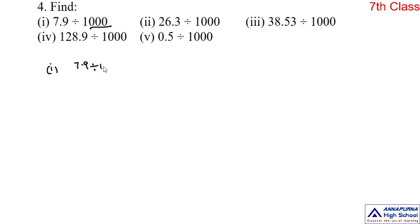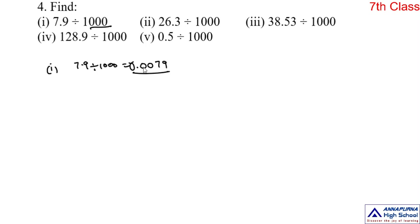So, 7.9 divided by 1000. Write the number first — ignore the decimal point: 79. Now shift the decimal point towards left by three digits. Here there is only one digit, but we need three digits. So: 1, 2, 3 — immediately put a decimal point. There is no whole part, put zero. We can write it as 0.0079.